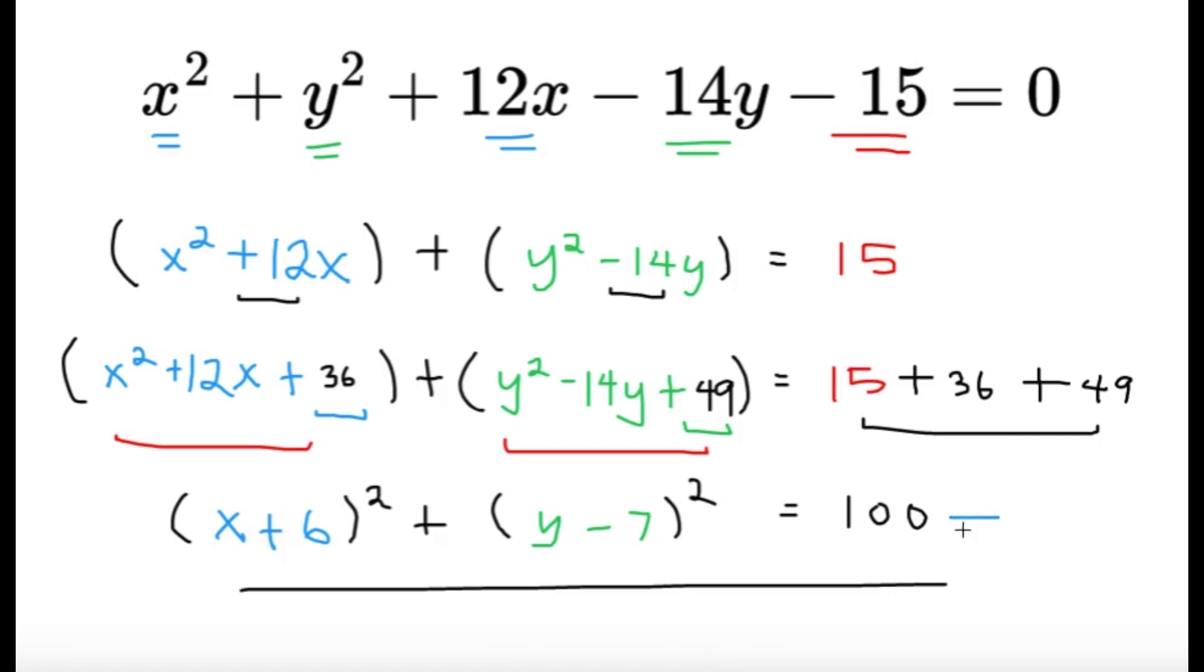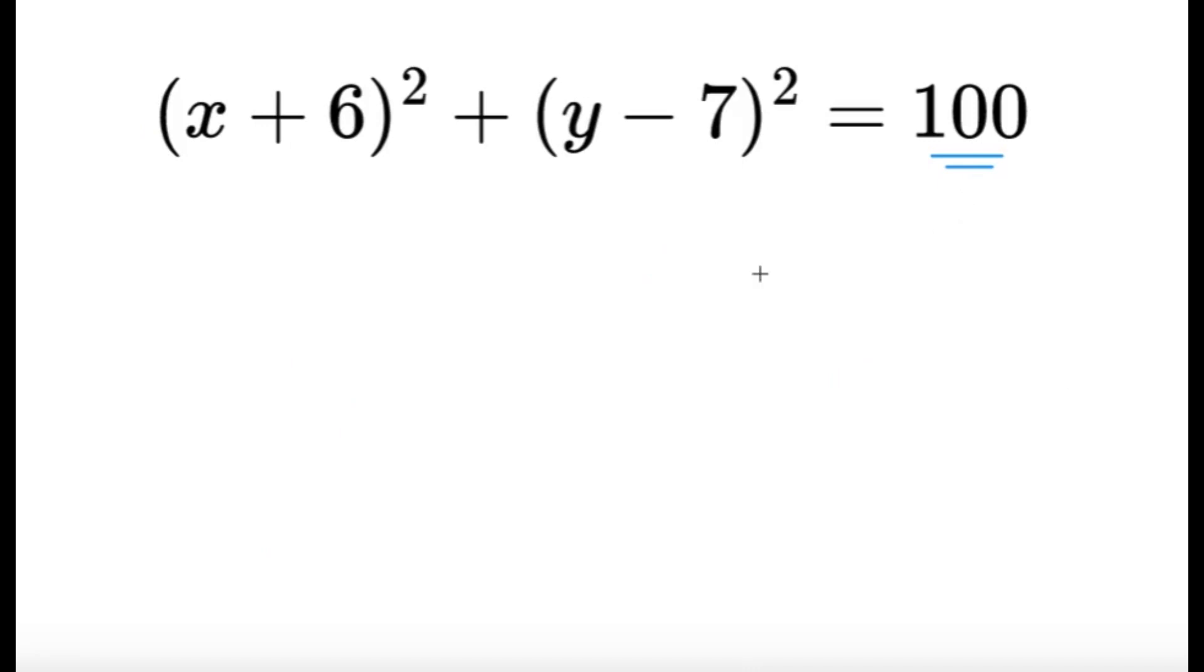Now this is very nice because this part, the 100, is r squared. So all we have to do is very simple, we just take this value which we know is going to be r squared, and all we have to do is we multiply it by pi, since pi r squared is the area of the circle. So we're going to get pi times 100.